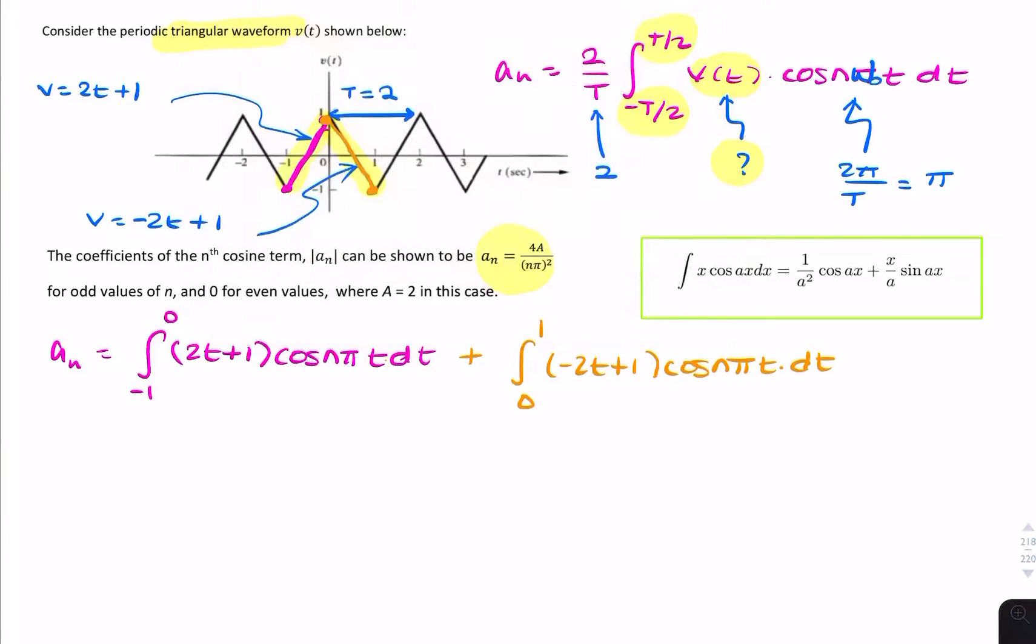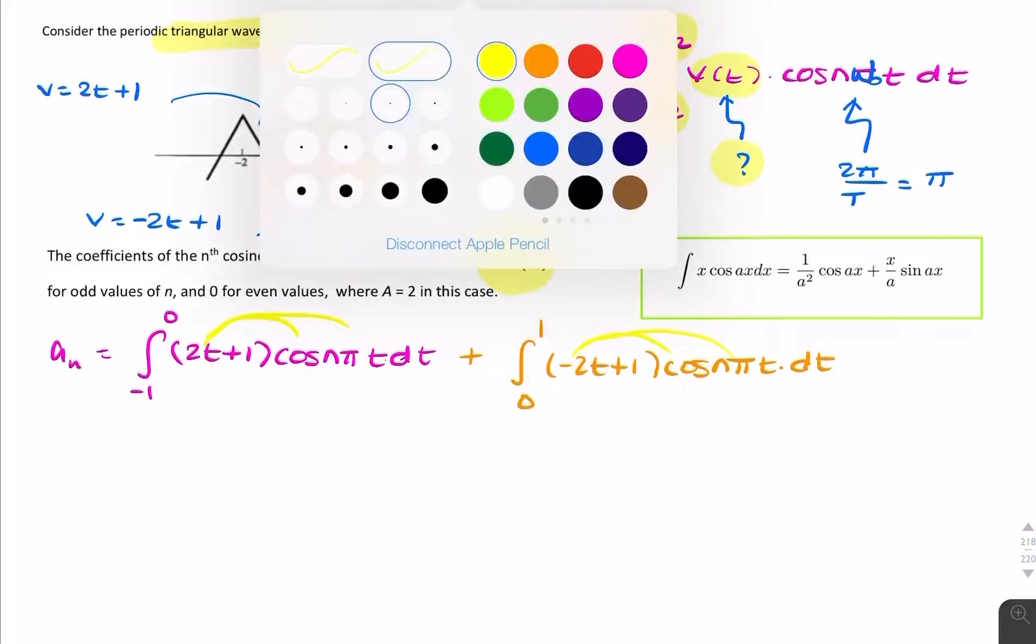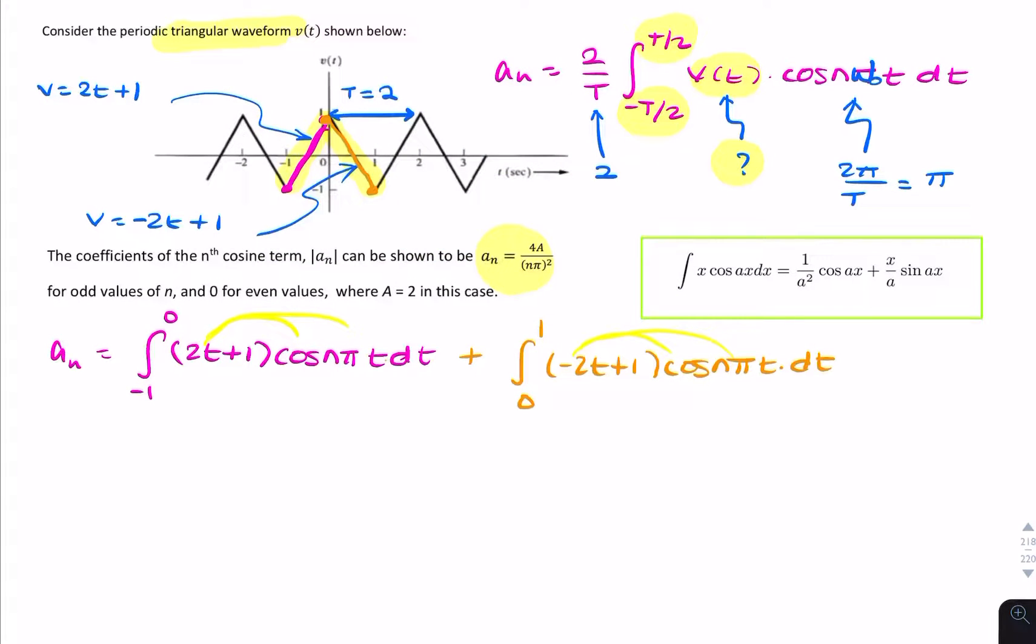So we can open out the multiplication and we can use this result here, which is the result of integration by parts. We can get this from any standard integration table, or you can do integration by parts. So let me just write that out, so that's from integration by parts. In this case, a will be n pi.